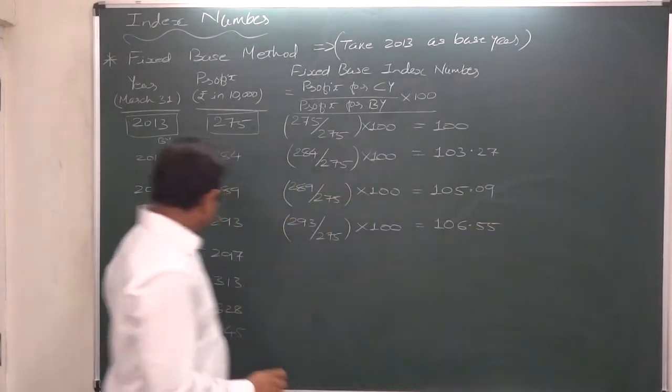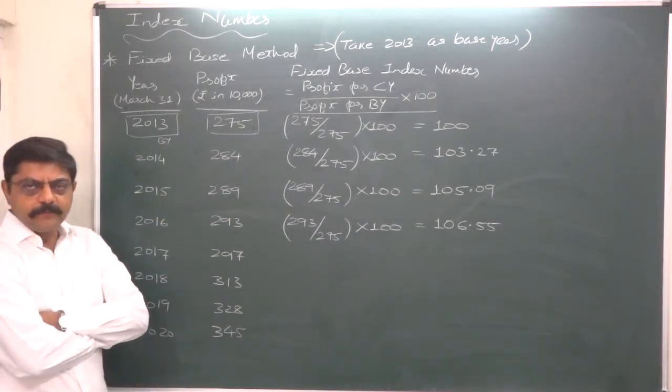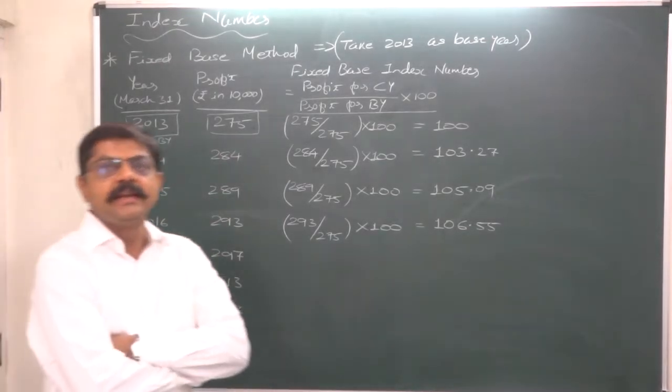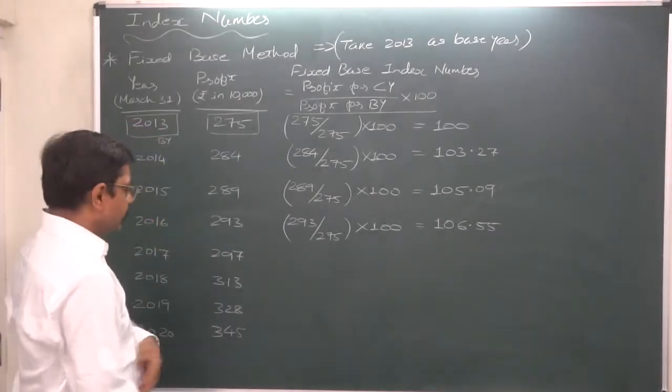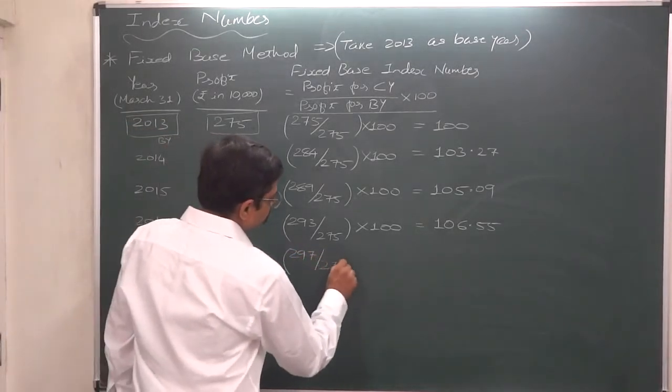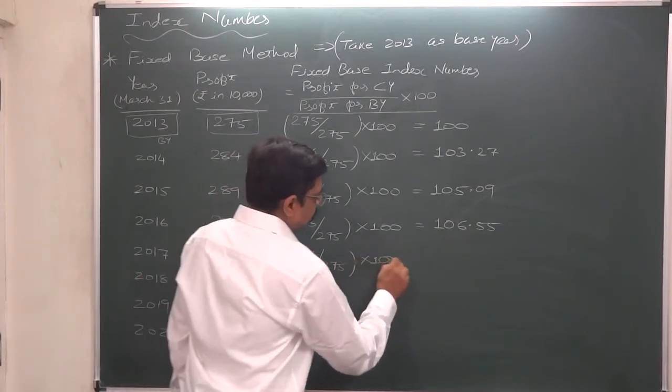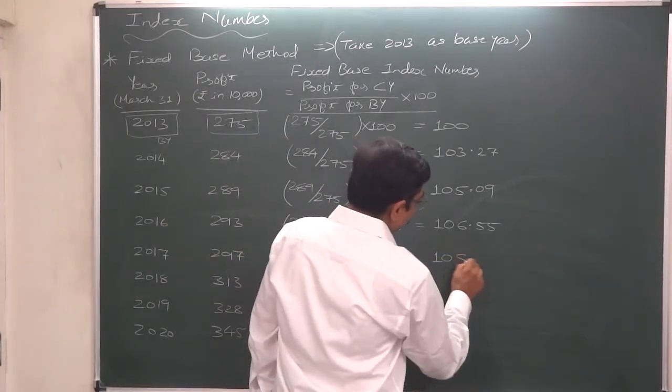So in 2016 profit increased by 6.55% as compared to the profit made in 2013. In 2017 it is 297 divided by 275 into 100. That means it is approximately 108.